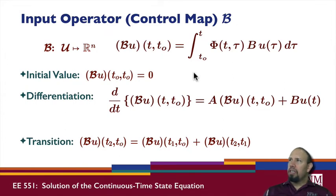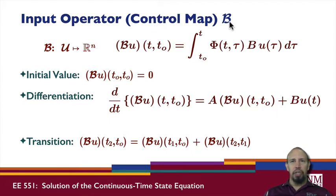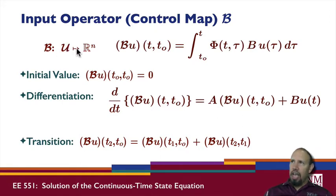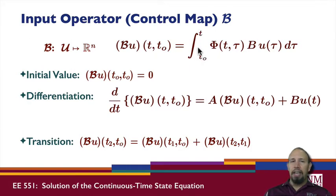The inputs to the system involve the input operator, also called the control map or input map. In discrete time this was just a matrix that expanded as time increased. In continuous time we have a convolution. B is an operator that takes signals in the space where the control signals lie and gives you a vector in ℝⁿ. Once you perform this definite integral, you get a vector in ℝⁿ — so even though it looks really complicated, when you're done all you get is a vector in ℝⁿ.